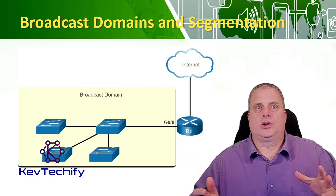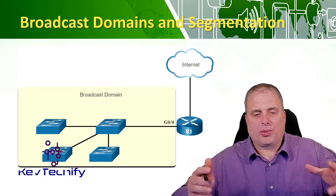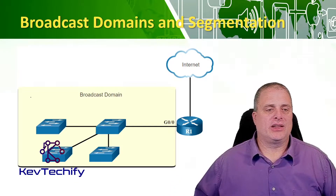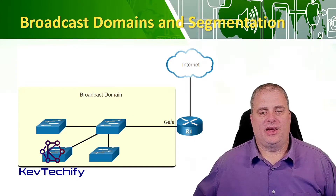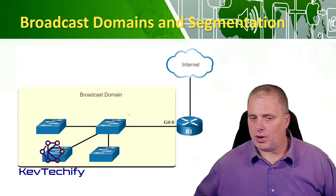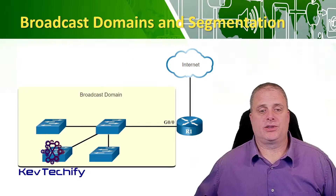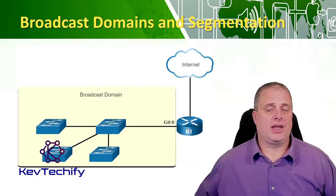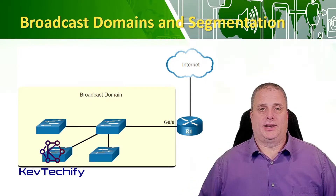Each router connects to a broadcast domain, and broadcasts are only propagated within that domain. As you can see here, this yellow square is our broadcast domain — broadcasts stay in here and do not go into the router. Switches allow broadcasts through, so we can find MAC addresses and DHCP servers. But as soon as a router gets a broadcast, it drops that packet and doesn't send it on.